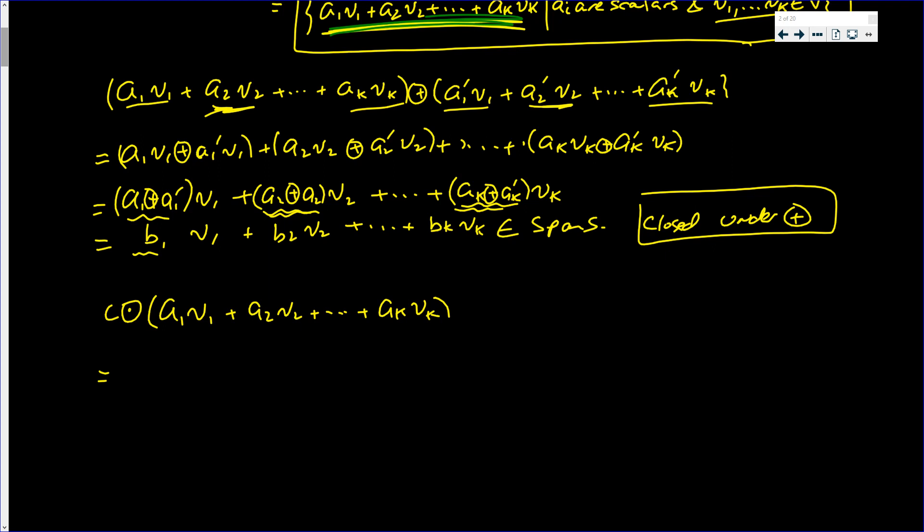And this becomes c circle dot a1·v1 plus c circle dot a2·v2, all the way down to c circle dot ak·vk. This equals (c circle dot a1)·v1 plus (c circle dot a2)·v2, all the way down to (c circle dot ak)·vk.